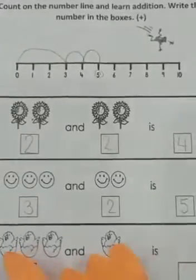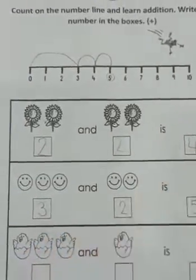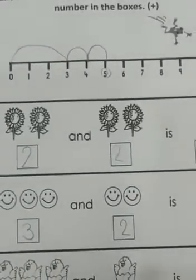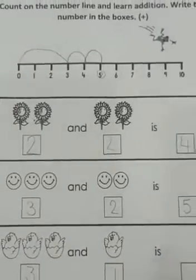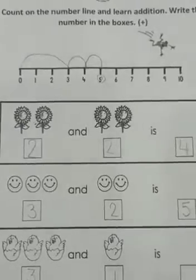Now the next one. 1, 2, 3. 3. And 1 over here. So let's count it all together in the number line.